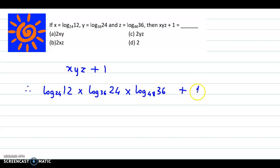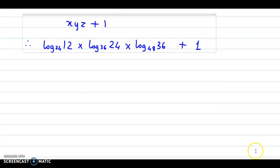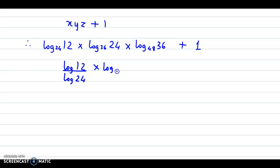Now we apply the change of base theorem in these log terms, and we obtain log 12 upon log 24, into log 24 upon log 36, into log 36 divided by log 48, plus 1.